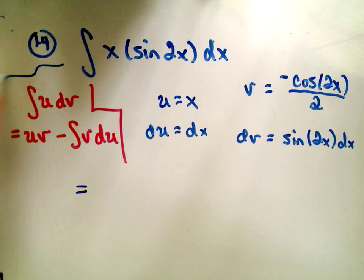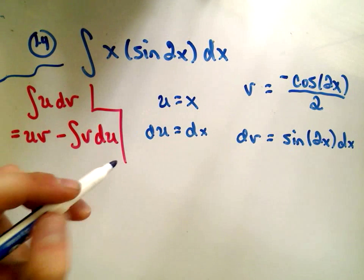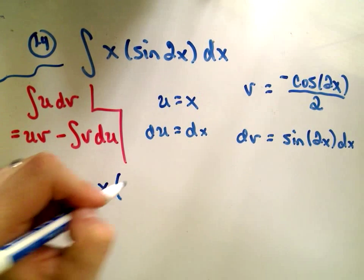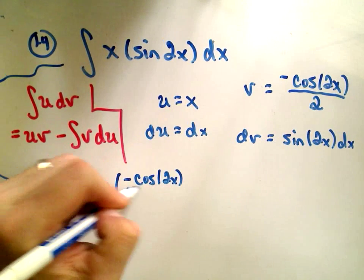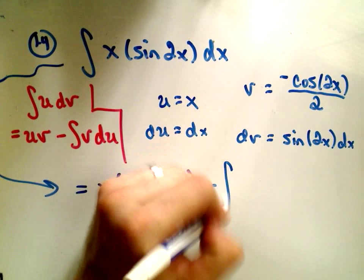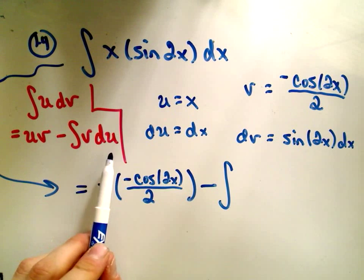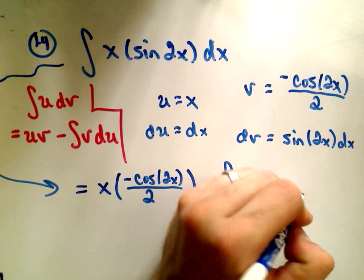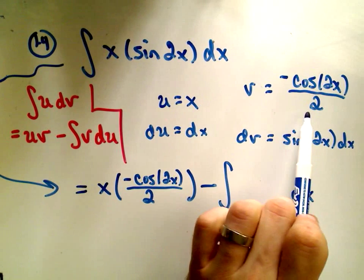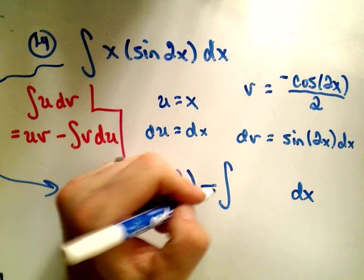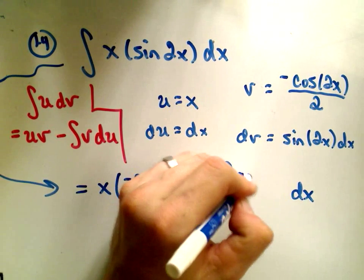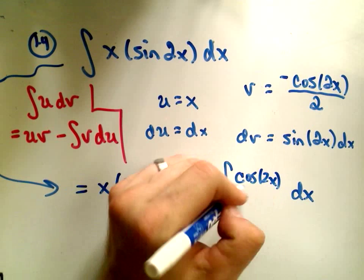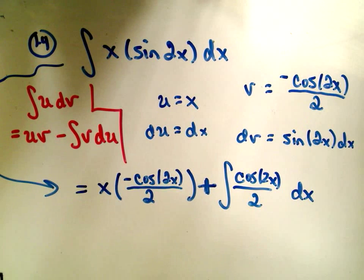So when we plug this in, we'll simply get u times v. So, x times negative cosine of 2x, all divided by 2, minus the integral of v du. Well, du is just dx. If we plug in v, I'm going to pull the negative out front and make it a positive. And then we're just integrating cosine of 2x divided by 2.